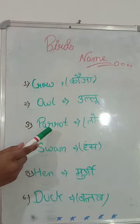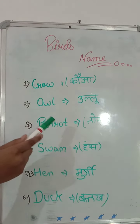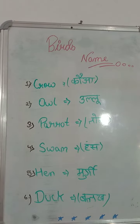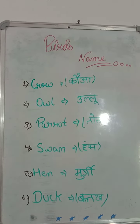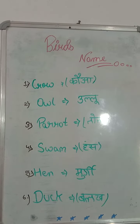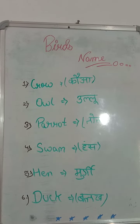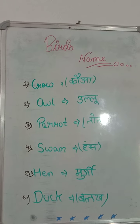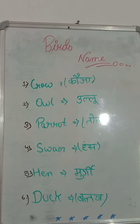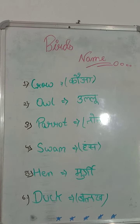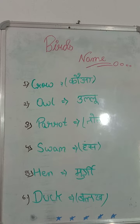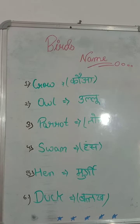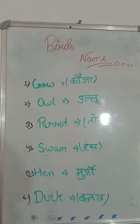The third bird is the Parrot — P, A, R, R, O, T. We call the Parrot a domestic animal. We also call it 'Dota' in Hindi. It is also called 'Palduan'. I have my own Parrot also.